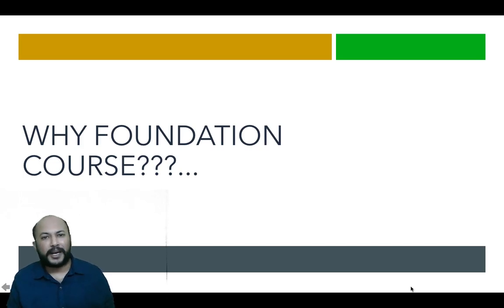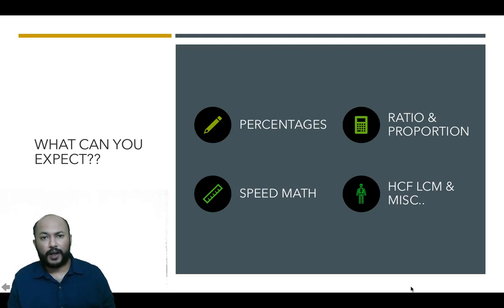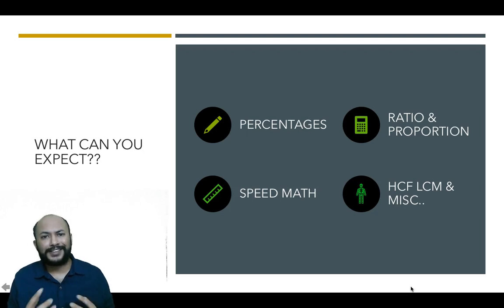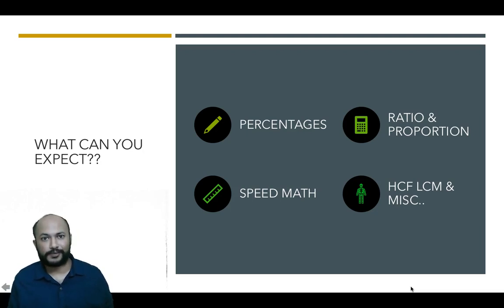Now what can you expect out of this course, and when we say foundation, what are the elements covered? There are four different things you can see on the screen. The first one being percentages, then you have ratio proportion, speed math, and then HCF, LCM and miscellaneous. These are the four elements which you repeatedly use in any of the modules in quants — be it time speed distance, permutation combination, data interpretation — you name any of the topics. If you are strong in these four elements, the remaining areas you need to work on are just the concepts of those specific modules.